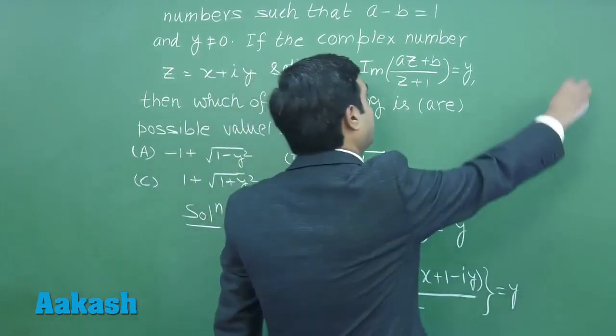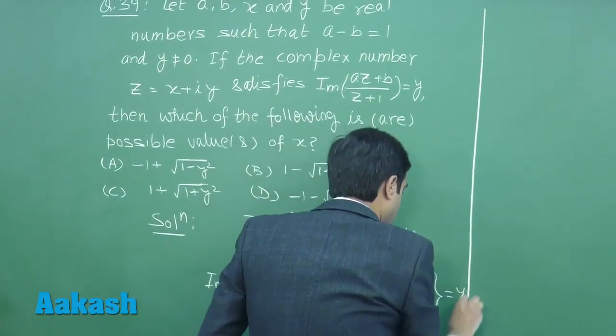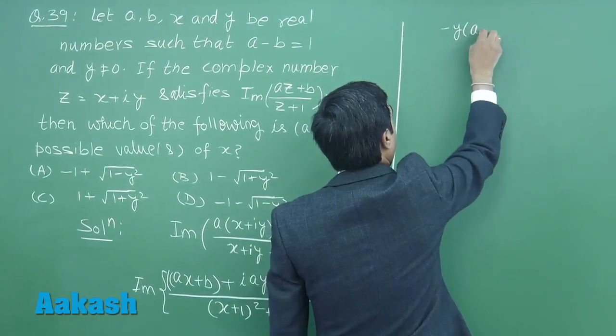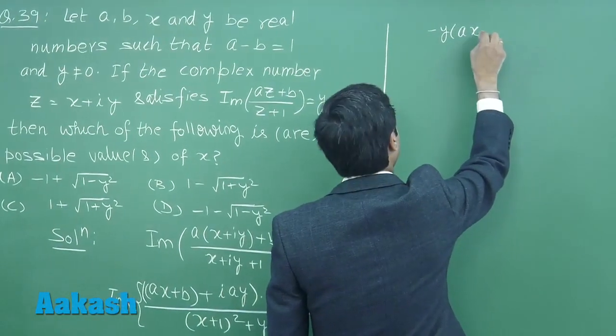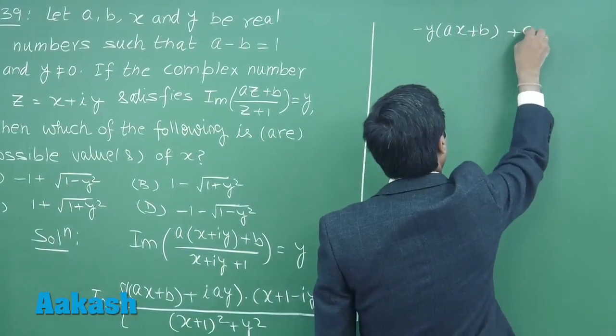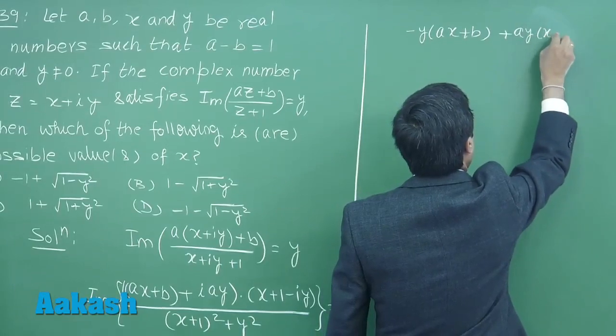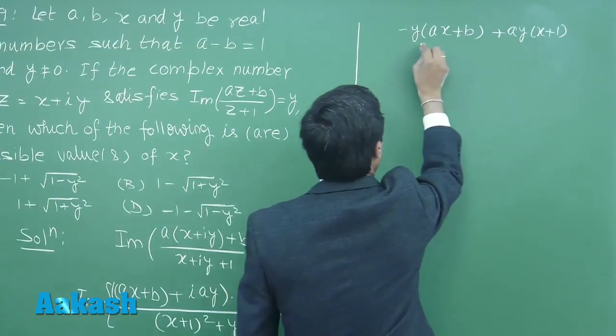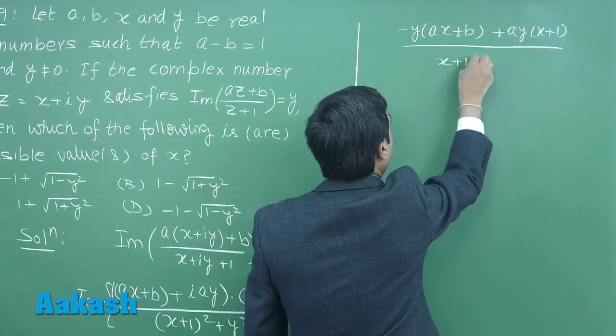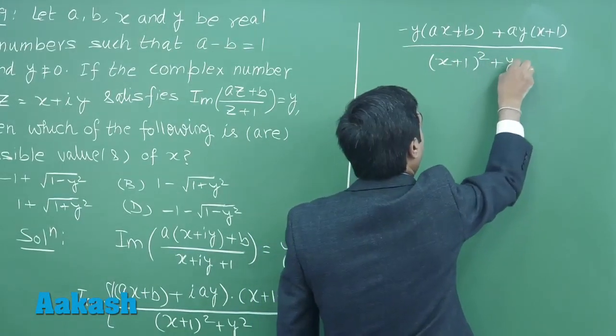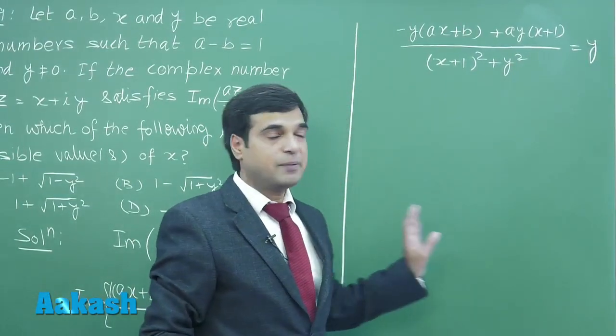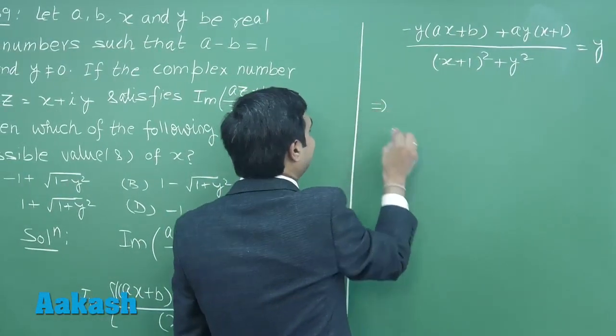This gives you imaginary part: minus y multiplied with (ax plus b) plus ay multiplied with (x plus 1) divided by (x plus 1) whole square plus y square equals y. Cross multiply and simplify.